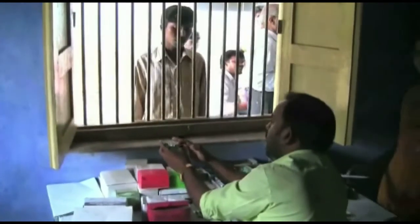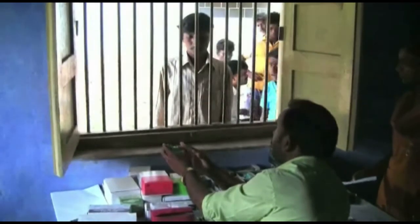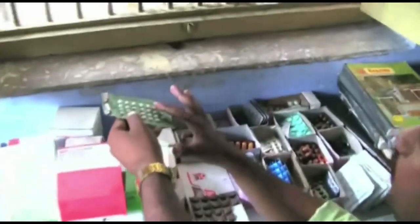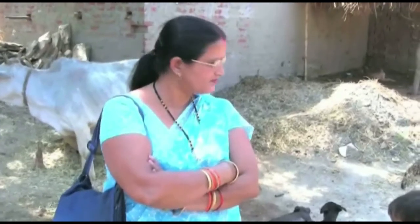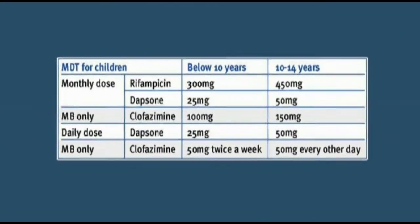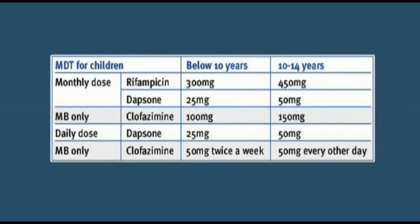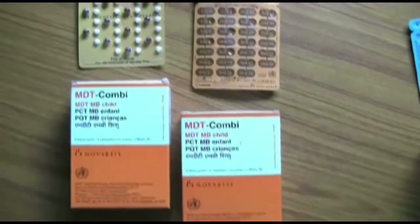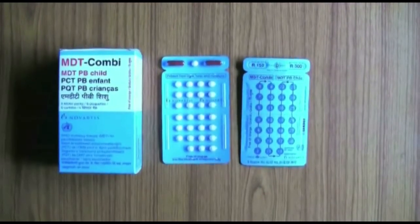Sometimes the patient cannot come to the health facility every month. To prevent interruption of treatment, MDT for more months may be given. However, support by a family member or ASHA is then preferred. The MDT dosage for children varies according to their age, but they must take the same drugs for the same length of time as an adult. Special blister packs are available for children.